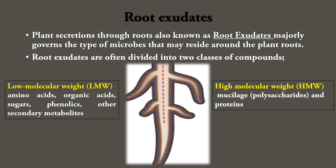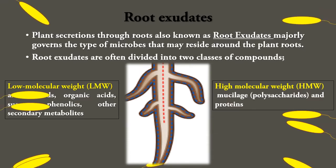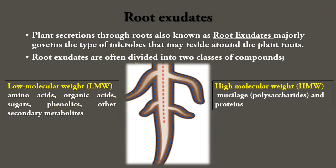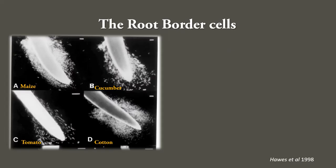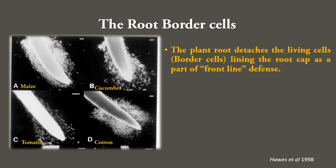When these molecules are sensed by microbes in the vicinity, they migrate towards the root by a phenomenon known as chemotaxis. Other than low and high molecular weight compounds, the plant root also detaches living cells lining the root cap as part of the front line of defense.